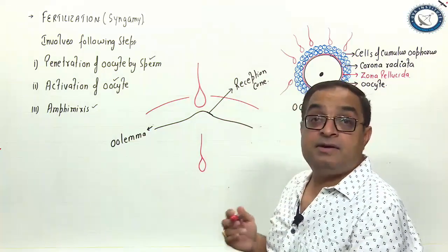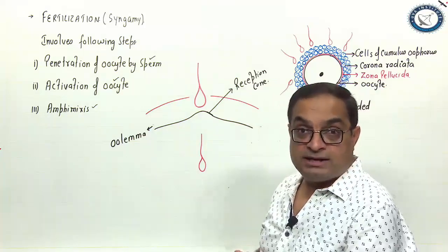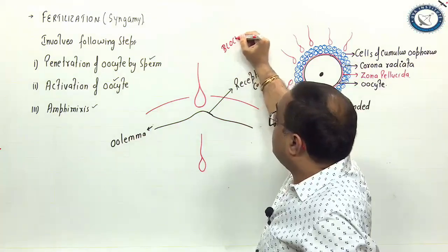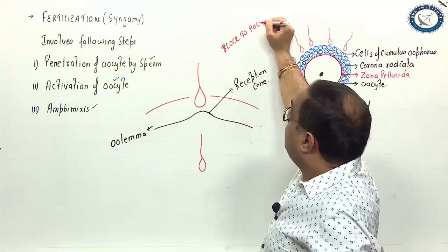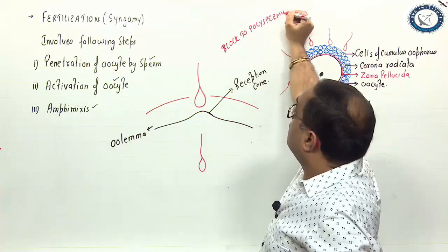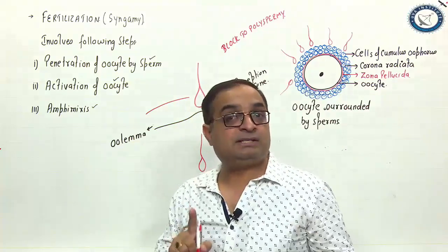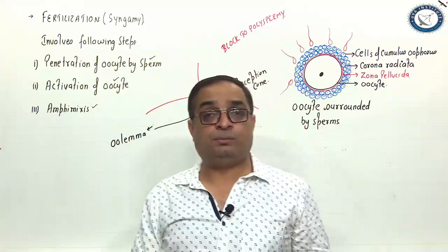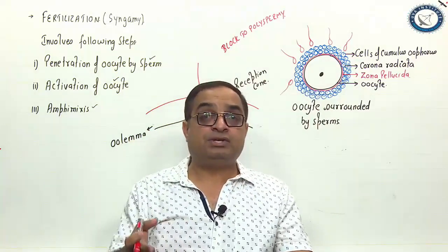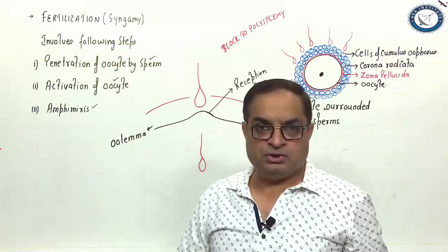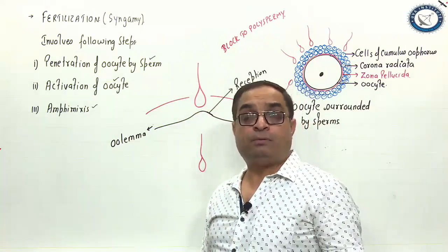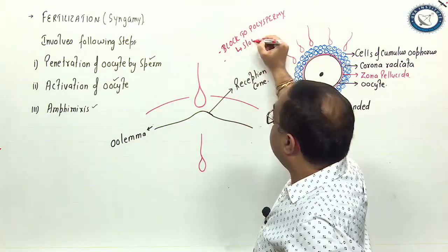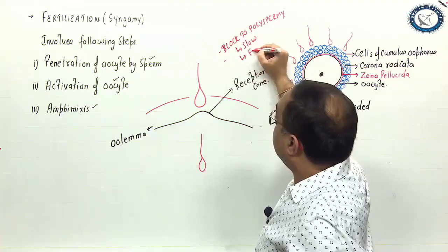The entry of the sperm activates the enzymes of the oocyte. Number 2, it also prevents polyspermy, that is there happens block to polyspermy. What is polyspermy? It is entry of more than one sperm into the oocyte. This should not happen because this will disturb the chromosome number resulting in triploid condition or maybe some abnormal polyploid condition. Such a zygote will not be able to form embryo. There should be block to the polyspermy.